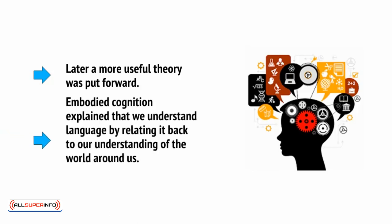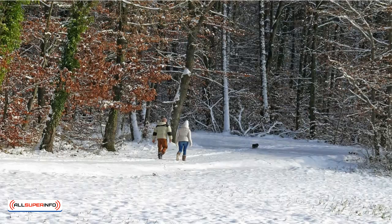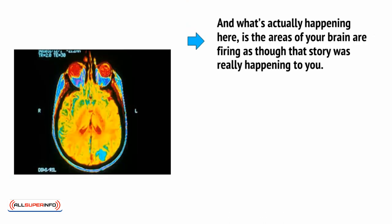Embodied cognition explained that we understand language by relating it back to our understanding of the world around us. When you hear someone telling you a story about walking through a cold forest, you understand that by imagining yourself walking through a cold forest, and this causes all of those relevant neural connections to fire as you think of the implications of that — relevant memories, etc. And what's actually happening is the areas of your brain are firing as though that story was really happening to you.